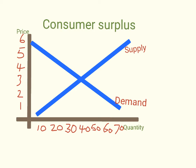In this diagram we can exactly identify and graph how much consumers are benefiting. We can also graph how much producers are benefiting — that's going to be in the next graph and is called producer surplus. But right now we're going to focus on the consumer surplus, or benefit, from a particular trade.